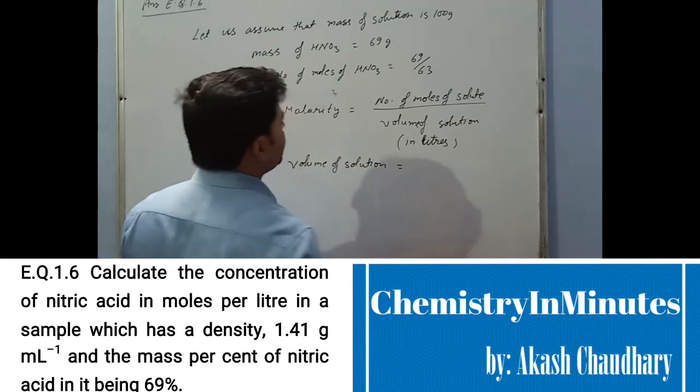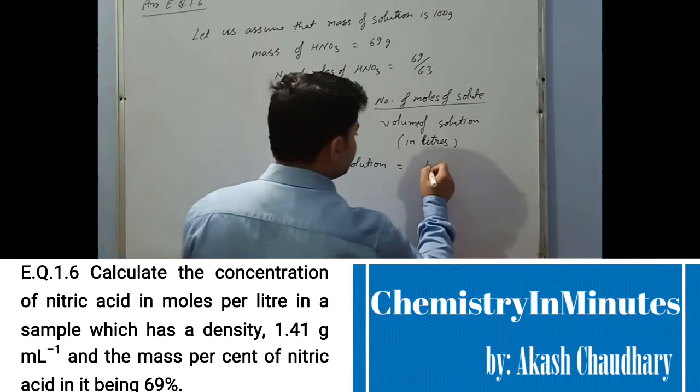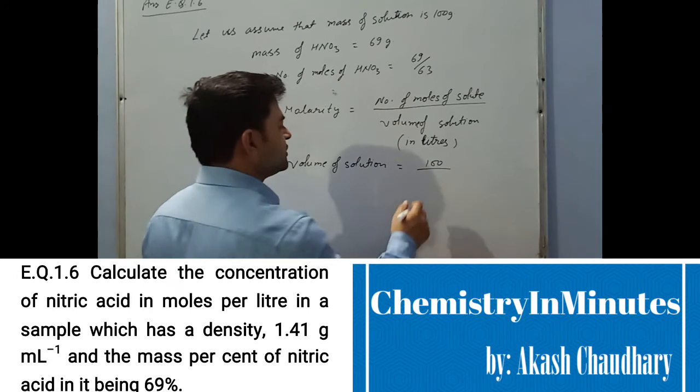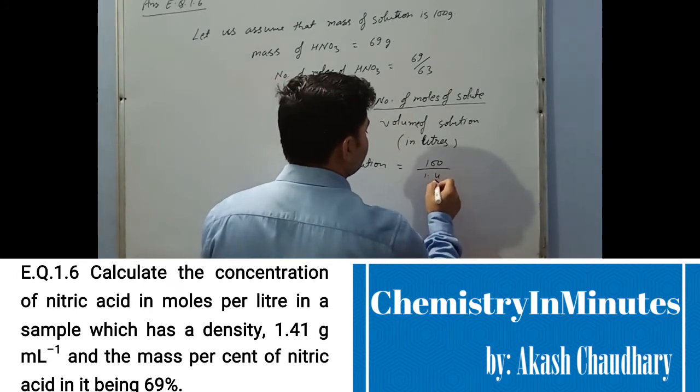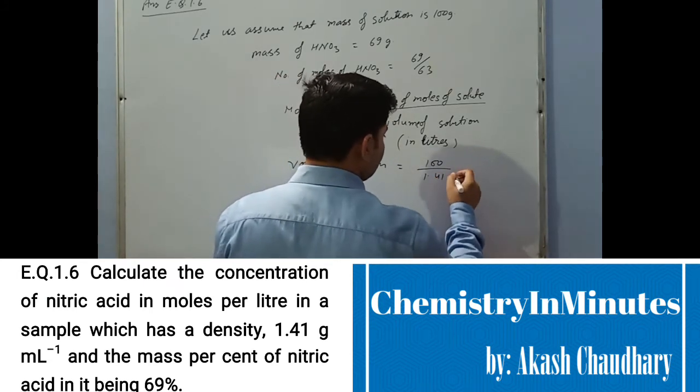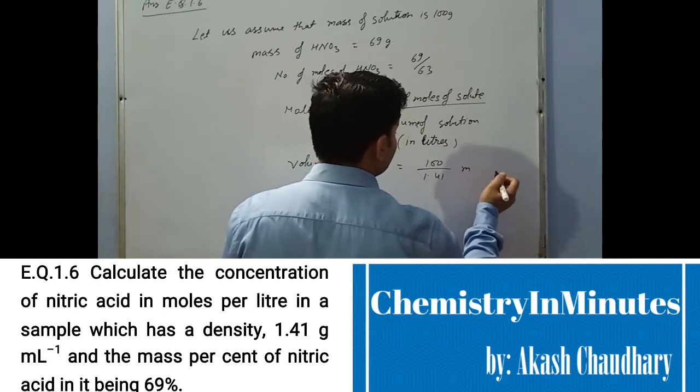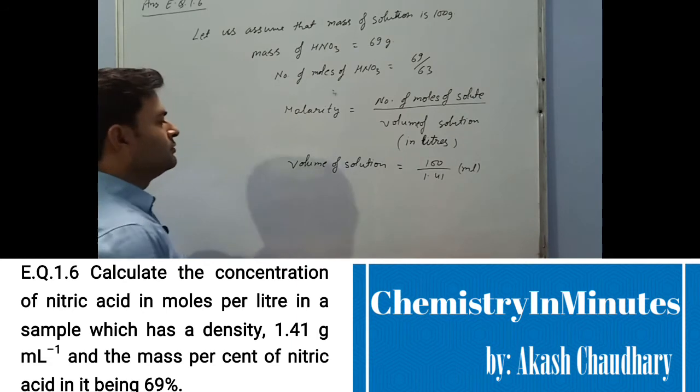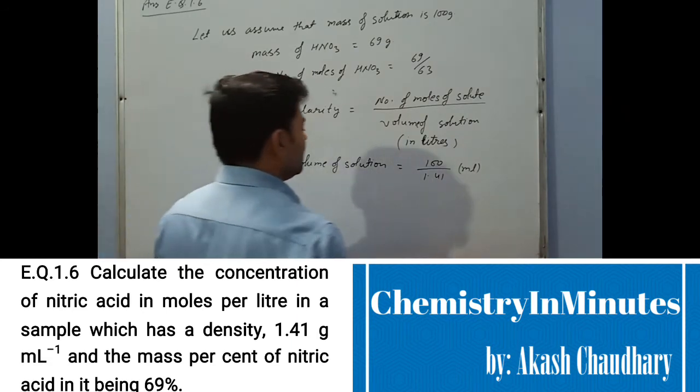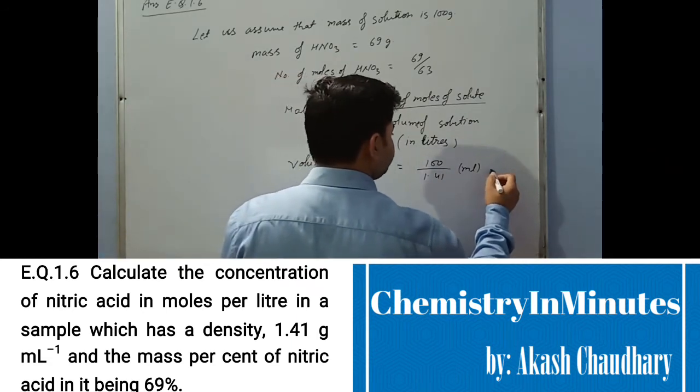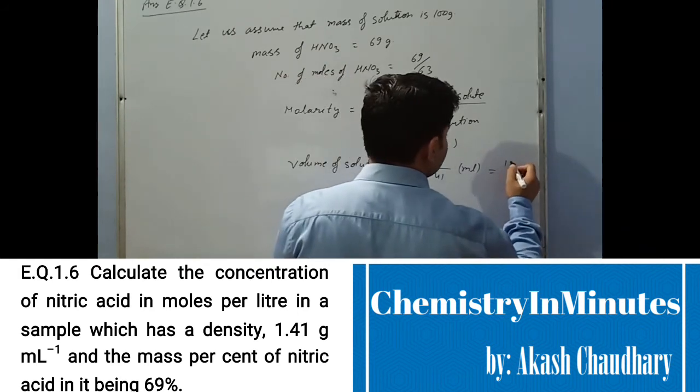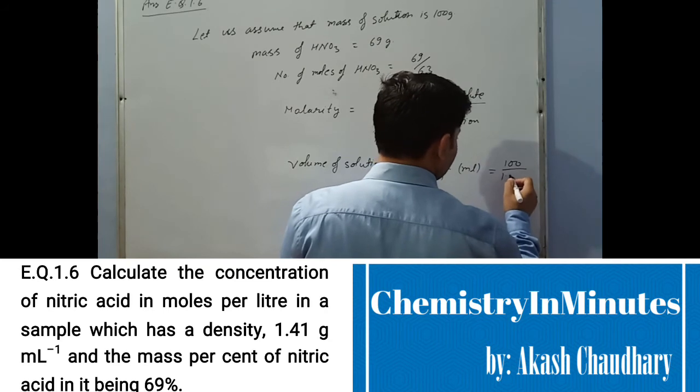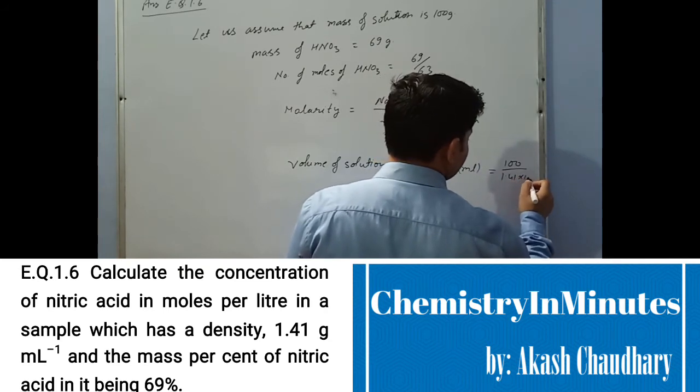The mass we have assumed is 100 grams, and we have to divide it by its density, which is 1.41 grams per milliliter. So this volume will come in milliliters. Now to convert it into liters, we have to divide it by 1000, so it will be written as 100 upon 1.41 into 1000.